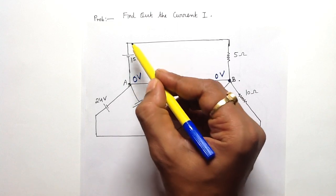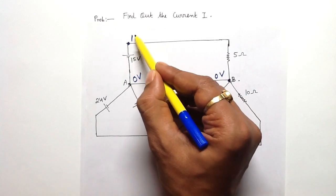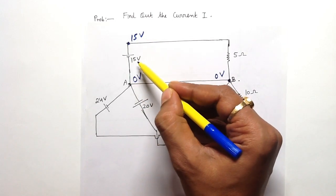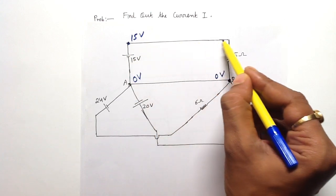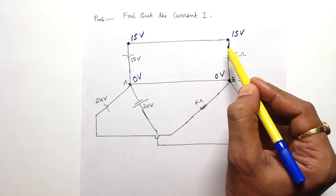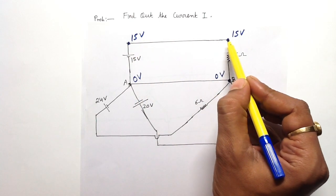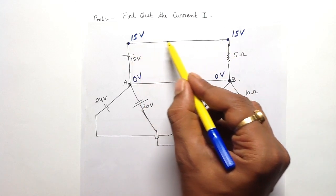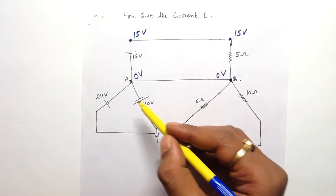If point A is at 0 volt, the potential of this point will be 15 volt, because a battery of 15 volt is present between these two points. This next point will also be at 15 volt, because there is no electrical element present in between these two points — they share the same potential.